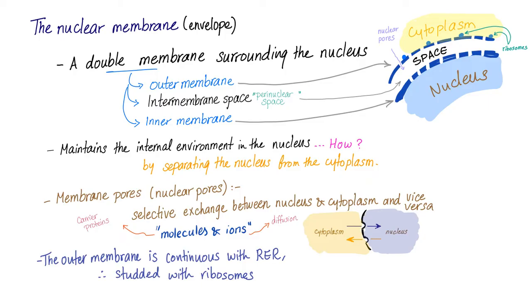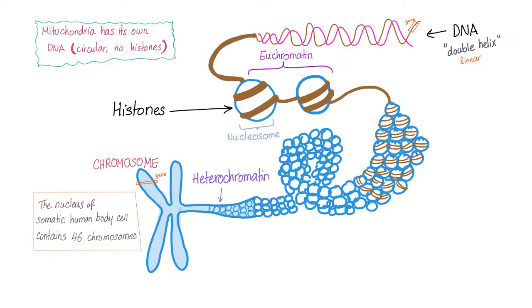The outer membrane is continuous with the rough endoplasmic reticulum, that's why it's studded with ribosomes. If we unwrap and unwind the chromosome, we will find all of this. So, we start with the chromosome, which is a big thing. The nucleus of the somatic cell has 46 chromosomes. Let's unwrap it.